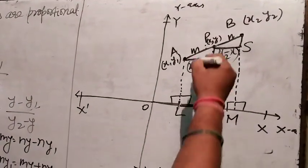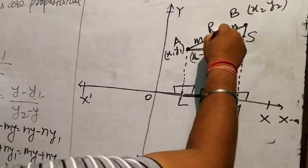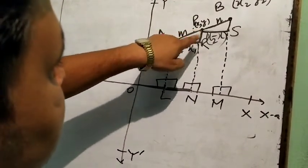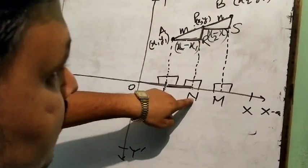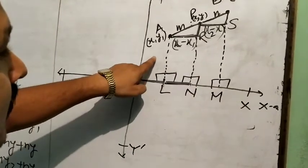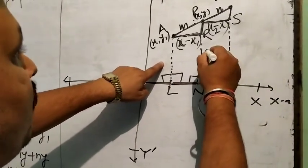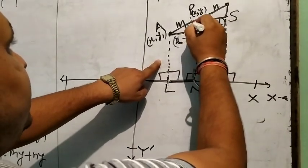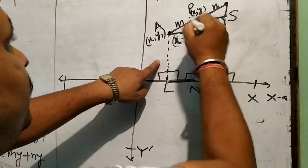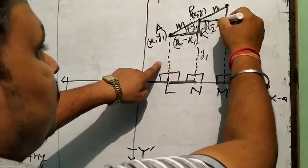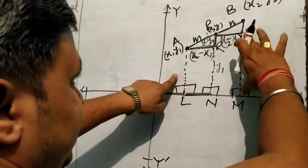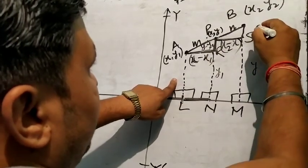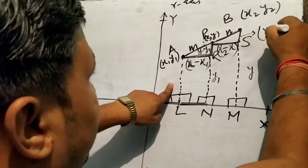Now in the perpendicular form, PR equals PN minus RN, and RN equals AL, which is y1. So PR equals y minus y1. And BS equals BM minus SM, where SM equals y, so BS equals y2 minus y.